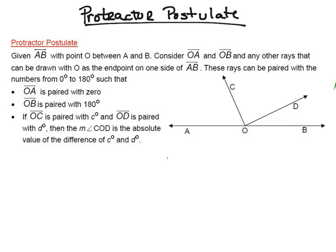Once again, this is the protractor postulate. We've got to imagine that we have a protractor sitting right over these angles here. We want to make sure that ray OA is paired with zero, so we should have zero degrees over here. Then we also want to make sure that ray OB is paired with 180 degrees over here. Then we're going to check out ray OC and OD. For this example, I'm going to use 60 degrees for ray OC.